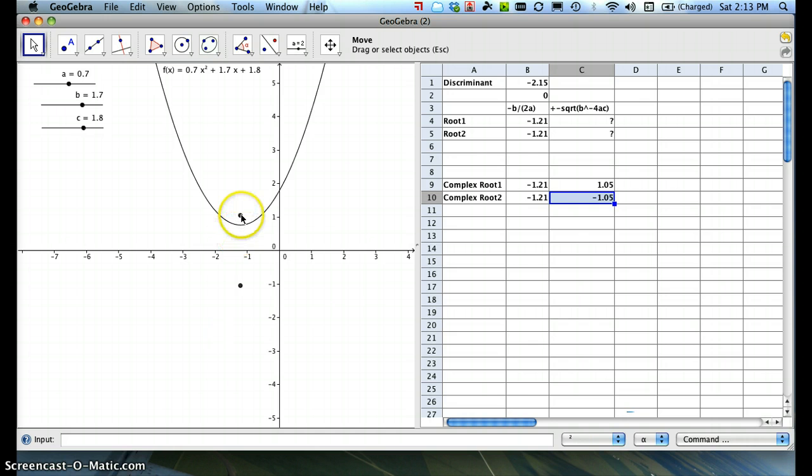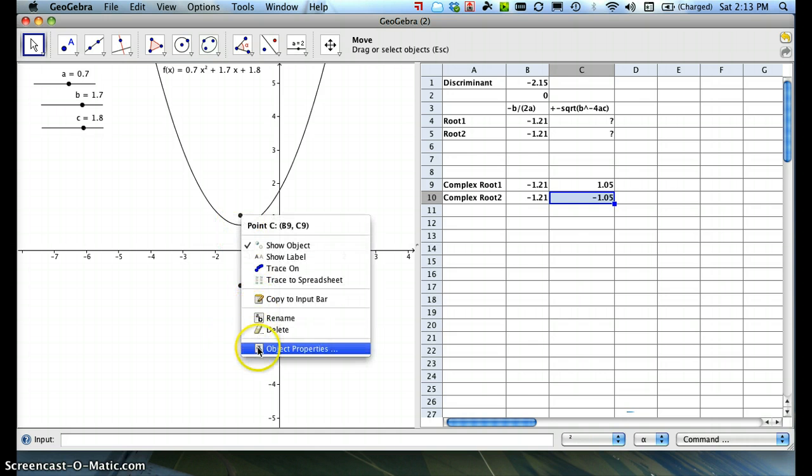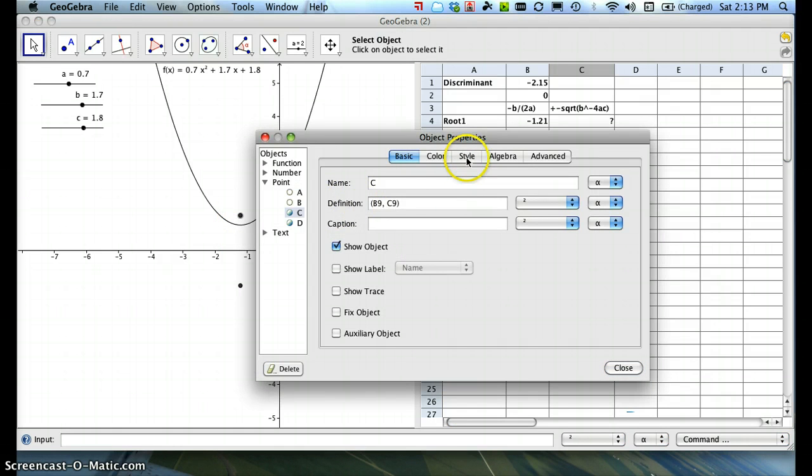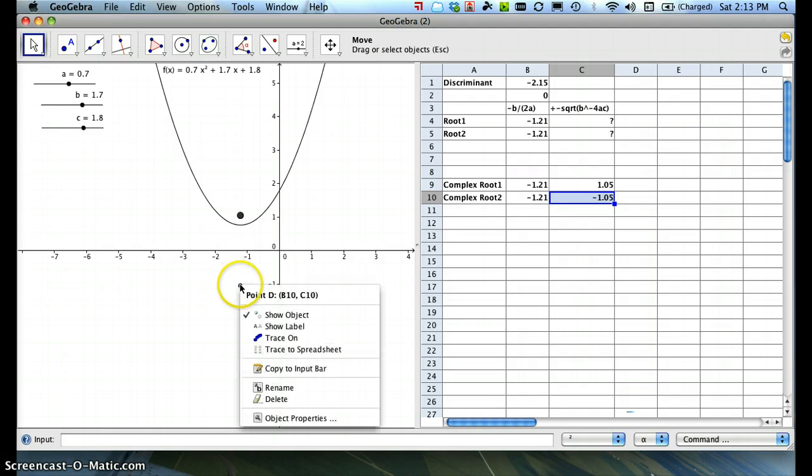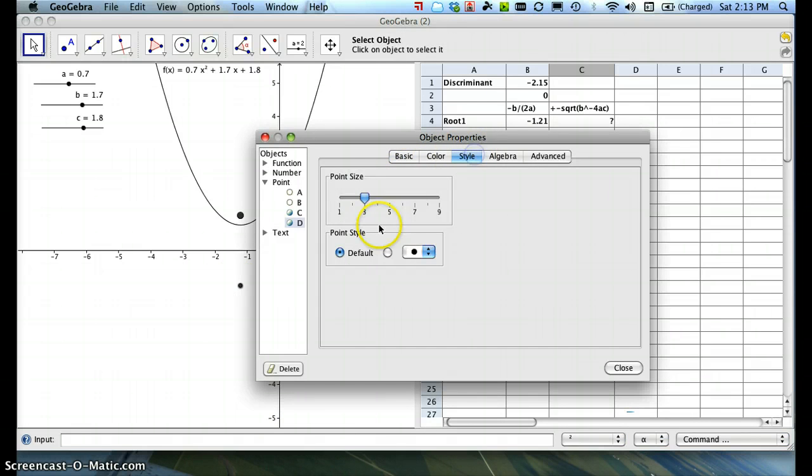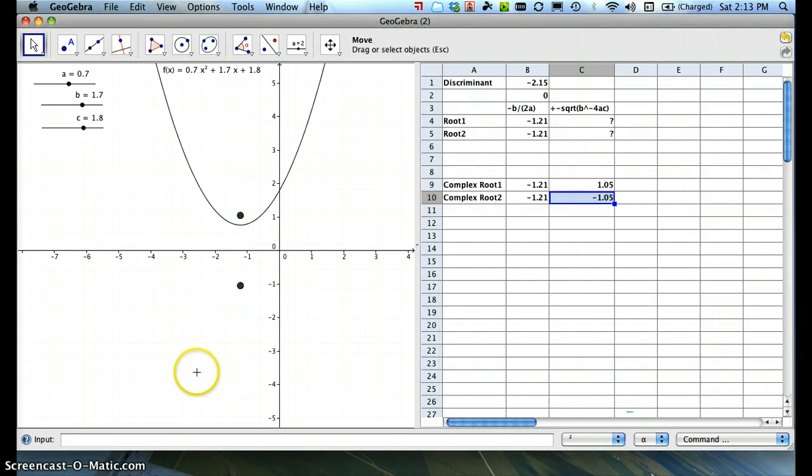and same thing, if we want to change the size, we can go to object properties, style, change those to thicker points, right-click, style, point size, reset.